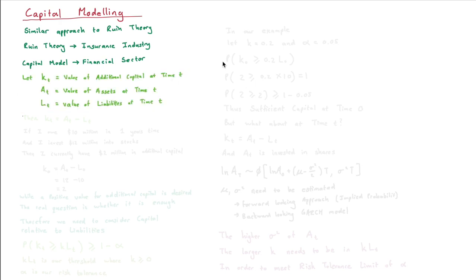Let's define a couple of things. Let KT equal the value of additional capital at time T. Some textbooks will refer to it as economic capital or risk capital. Let AT equal the value of assets at time T, and let LT equal the value of liabilities at time T. Then KT equals AT minus LT. For those who have done pensions, this links up nicely with the idea of surplus.